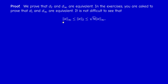Going back to the definitions, the infinity norm of any vector x in ℝⁿ is less than or equal to the Euclidean norm of x, simply because the maximum is less than the square root of the sum. And the Euclidean norm of x is less than or equal to √n times the infinity norm of x, where n is the dimension of the space.